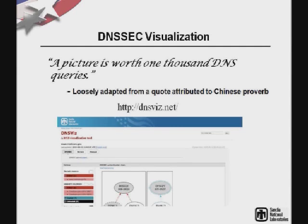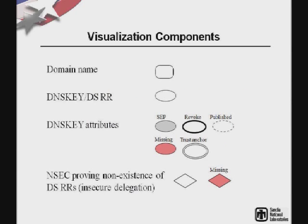The tool is available online at dnsviz.net. It constructs an authentication graph with nodes and directed edges. Domain names, DNS keys, and DS resource records are shown as elliptical-shaped nodes decorated based on their attributes: if the SEP bit is set, it's filled with gray; if the revoke bit is set, a darker border; if published-only, a dashed border; if missing but referenced somewhere, it's red; and if acting as a trust anchor, a double border. A diamond-shaped NSEC node represents zones that are signed but have insecure delegations, using NSEC or NSEC3 records to repudiate the existence of DS-type resource records, effectively proving an insecure delegation.